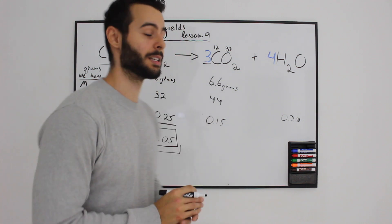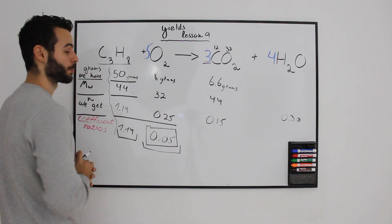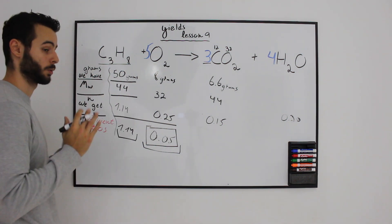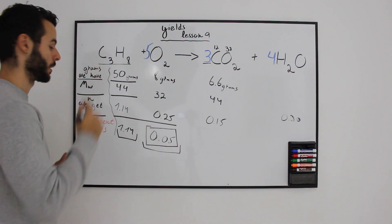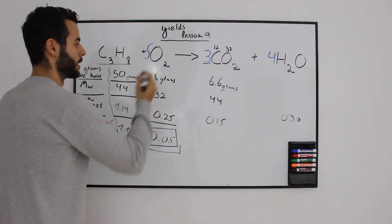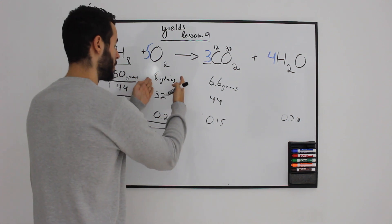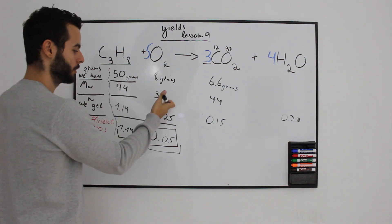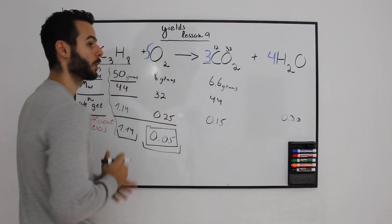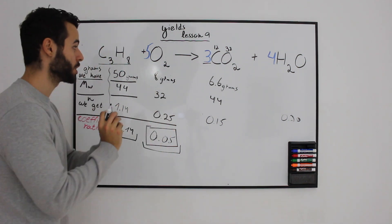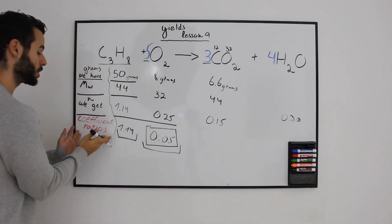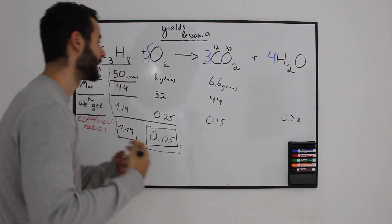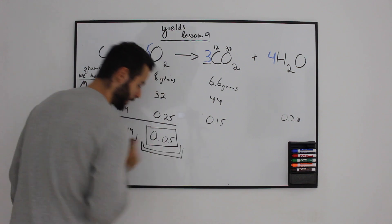Let me recap the entire video. We have 50 grams of propane; the molecular weight of propane is 44. Dividing gives us 1.14 moles. The coefficient of propane is 1, so dividing by 1 gives us a ratio of 1.14. For oxygen, we have 8 grams; the molecular weight is 32. Dividing gives us 0.25 moles. The coefficient of oxygen is 5, so dividing by 5 gives the coefficient ratio, showing that oxygen limits the reaction.